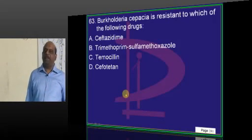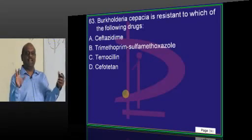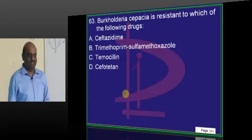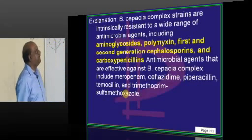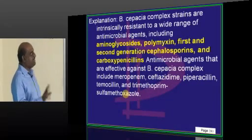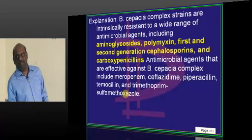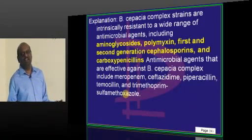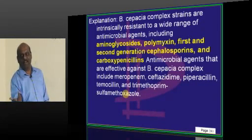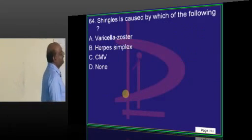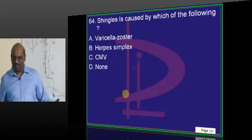Burkholderia cepacia is resistant to certain antibiotics. Typically aminoglycosides, polymyxins, and first and second generation cephalosporins — it is not vulnerable to these. That is the point. This is another wild guess; it's an impossible question — the kind called a prescription for suicide.